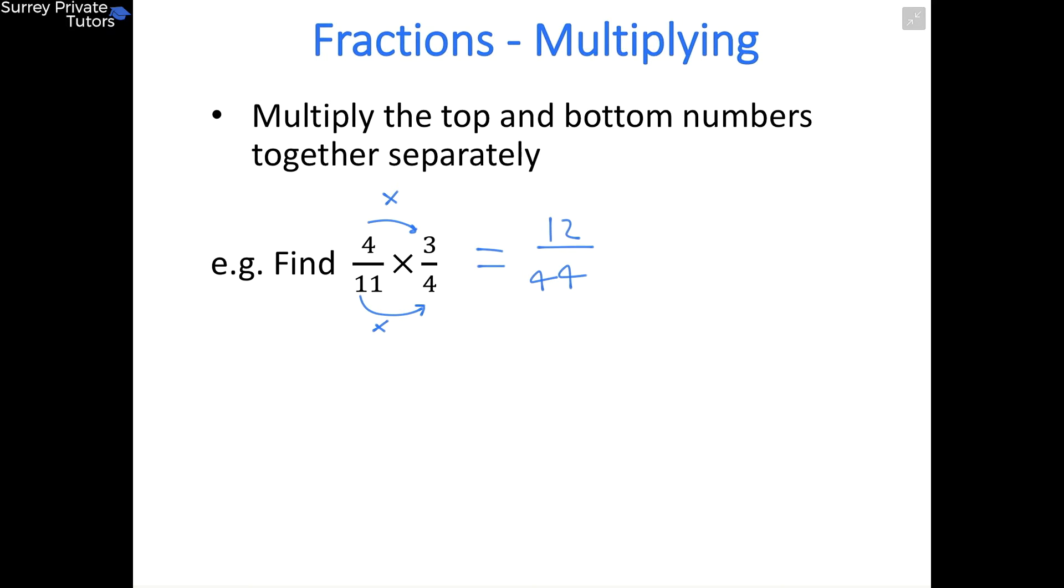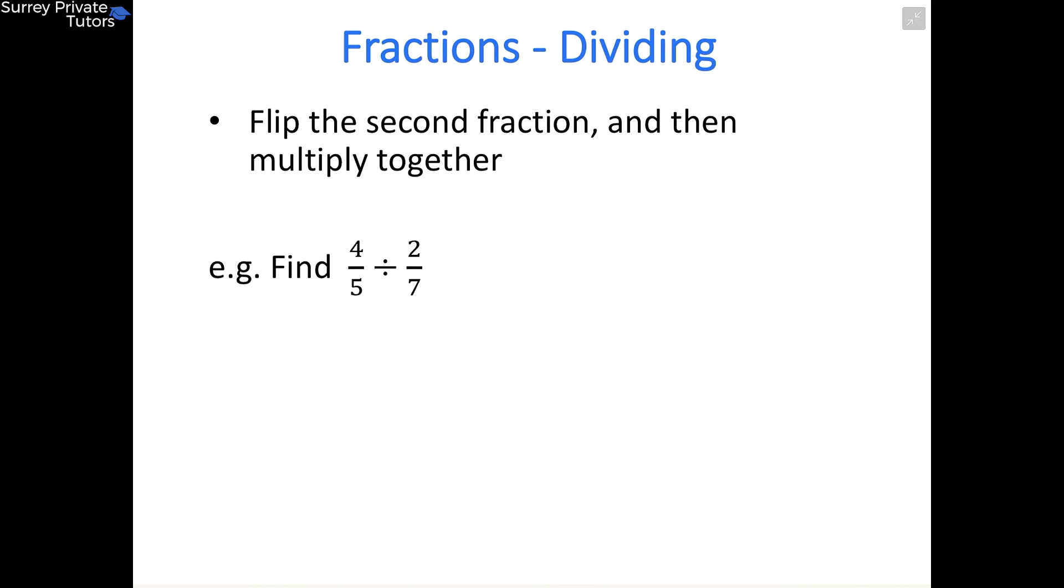So we're nearly finished. The last step, which you almost always want to do, is simplify the fraction as far as you can. So 12 and 44, we can divide this by 4. If you divide 12 by 4 you get 3, and if you divide 44 by 4 you get 11. So you end up with your final answer as being 3/11.